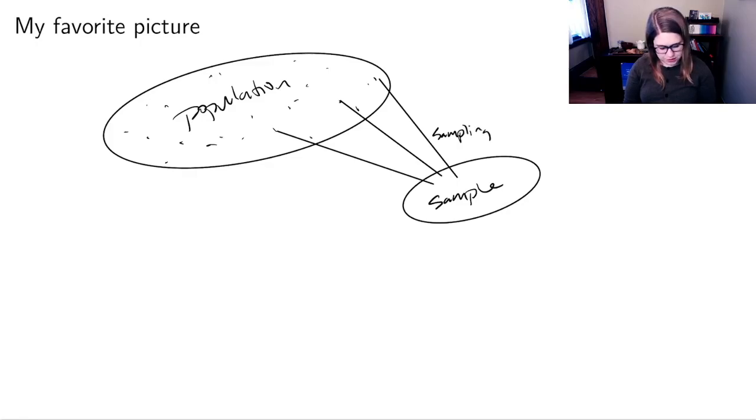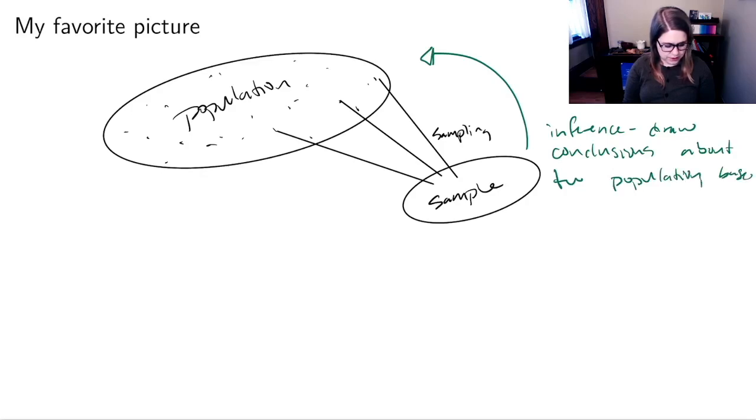And then what we're going to try and do in this class is make the movement back in the other direction. We're going to make inference and draw conclusions about the population based only on the sample.